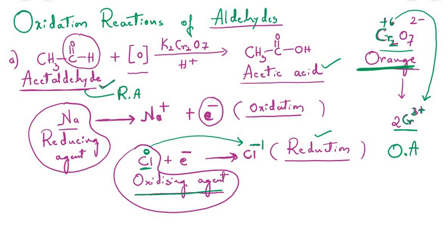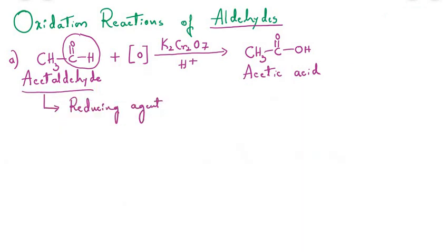Chlorine is acting as an oxidizing agent for Na, because it is making Na lose its electron, while Na is acting as a reducing agent for Cl, since Cl gains the electron and is converted into Cl⁻. From this concept it is clear that if an aldehyde is undergoing oxidation, it means it is acting as a reducing agent — it reveals that it is reducing some other species.